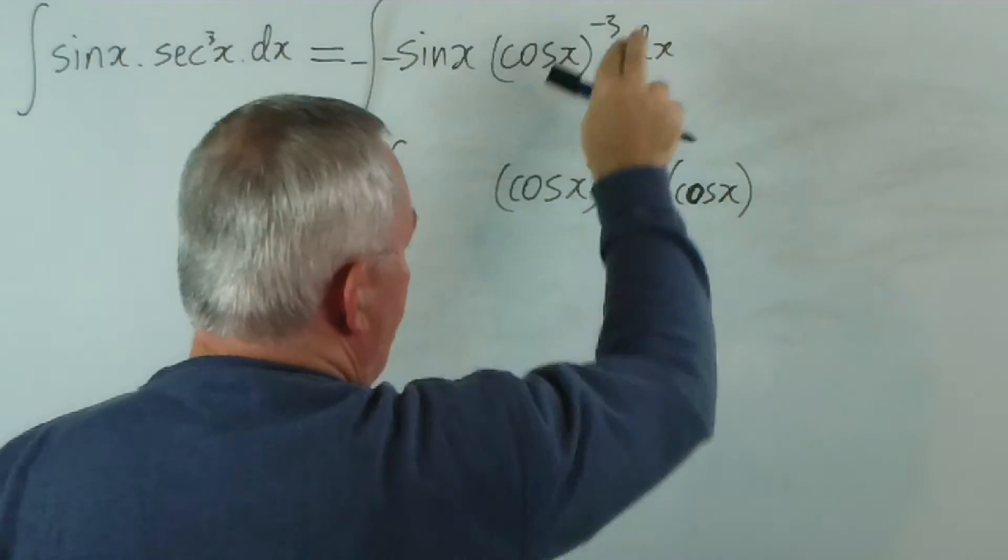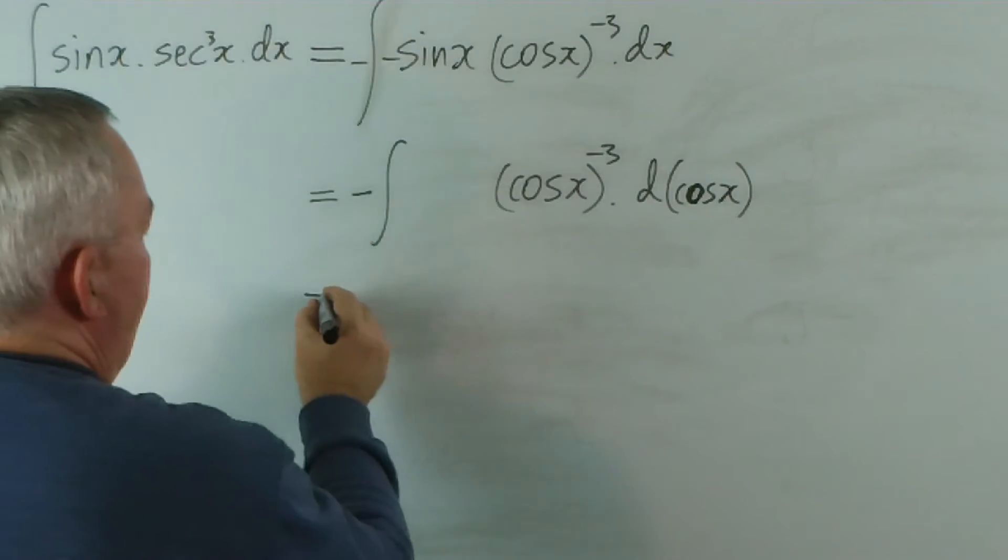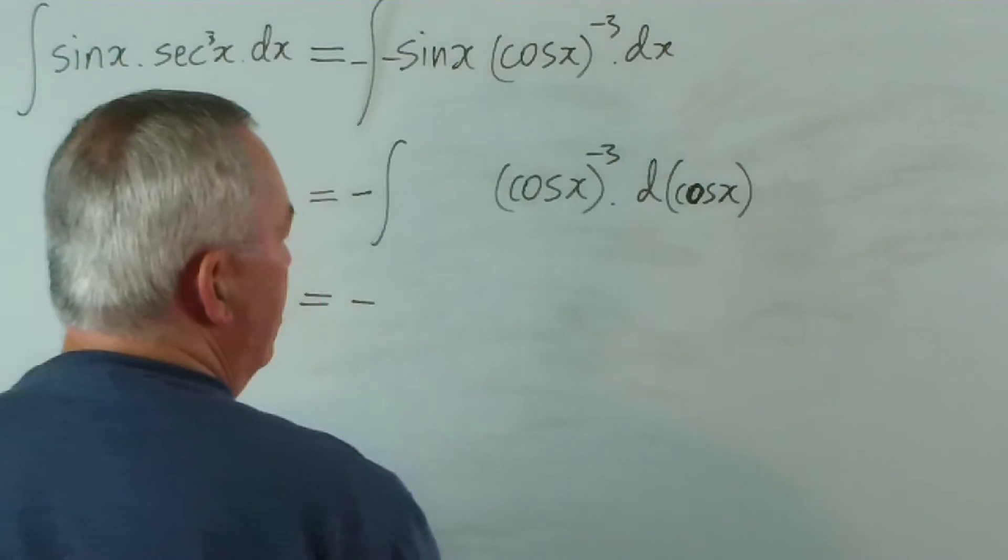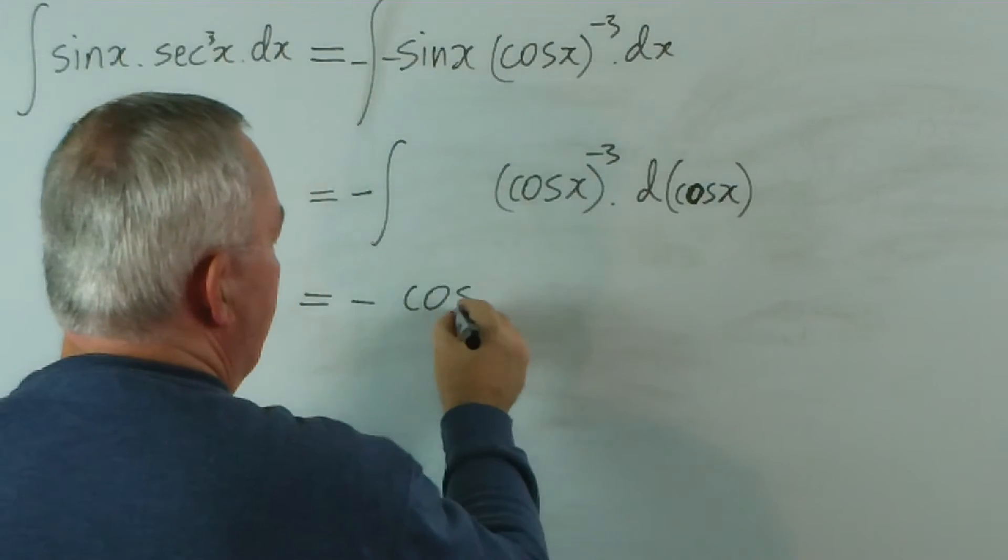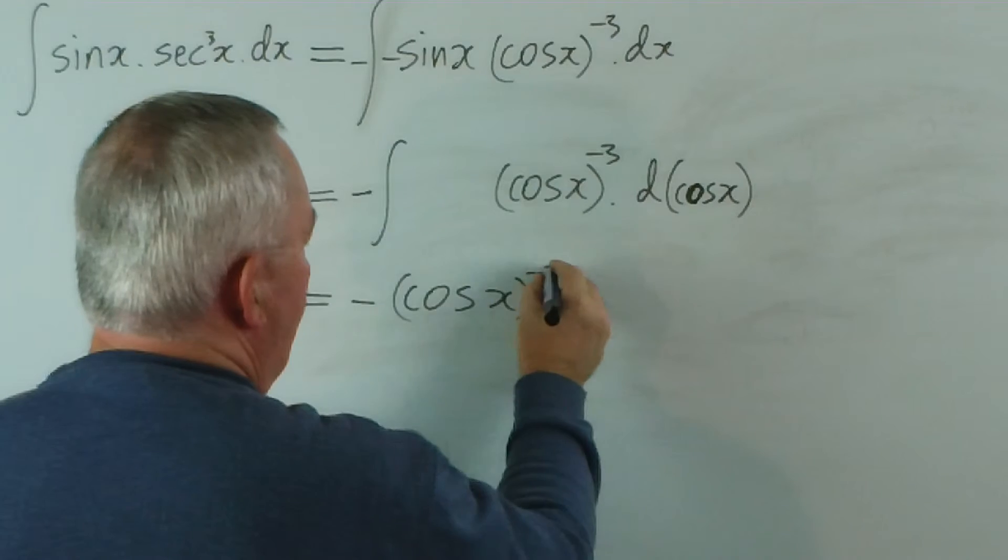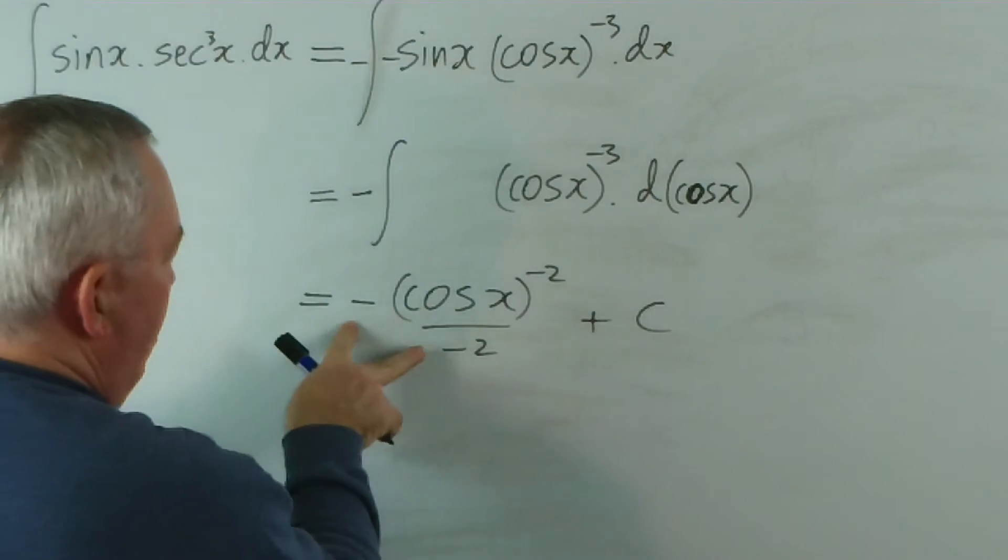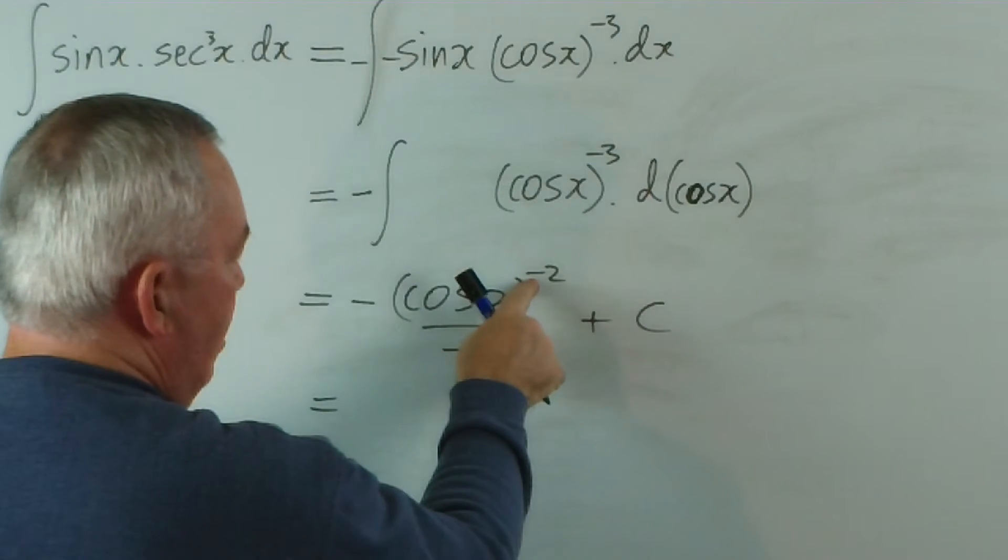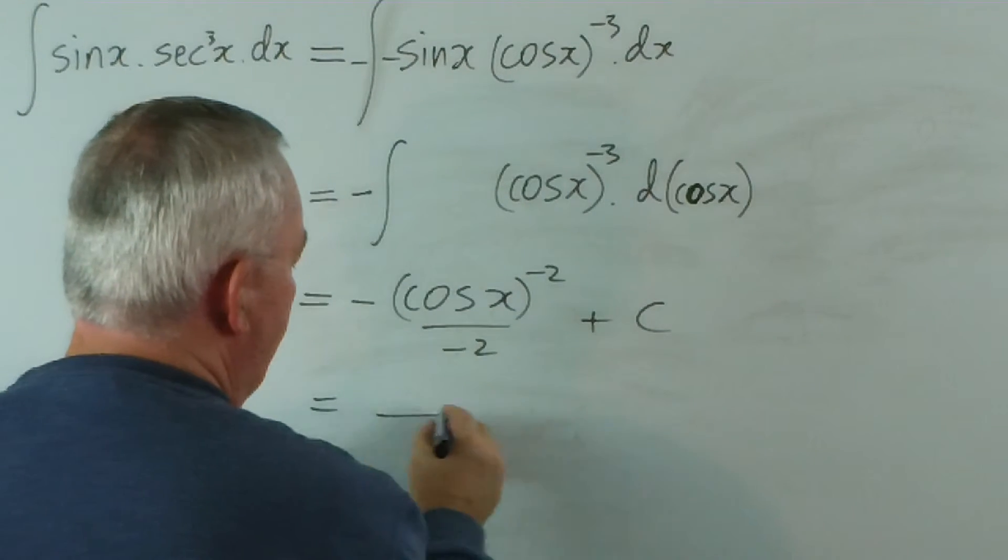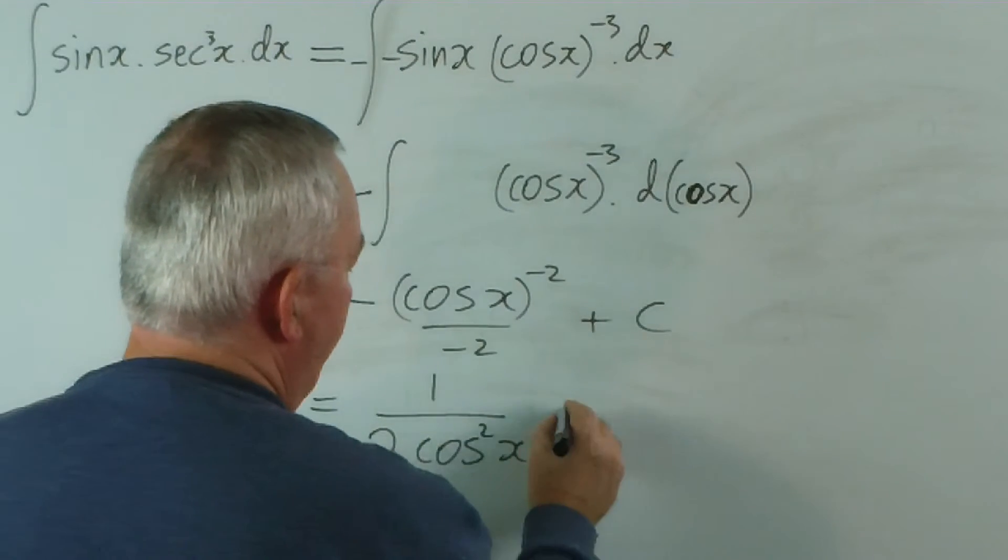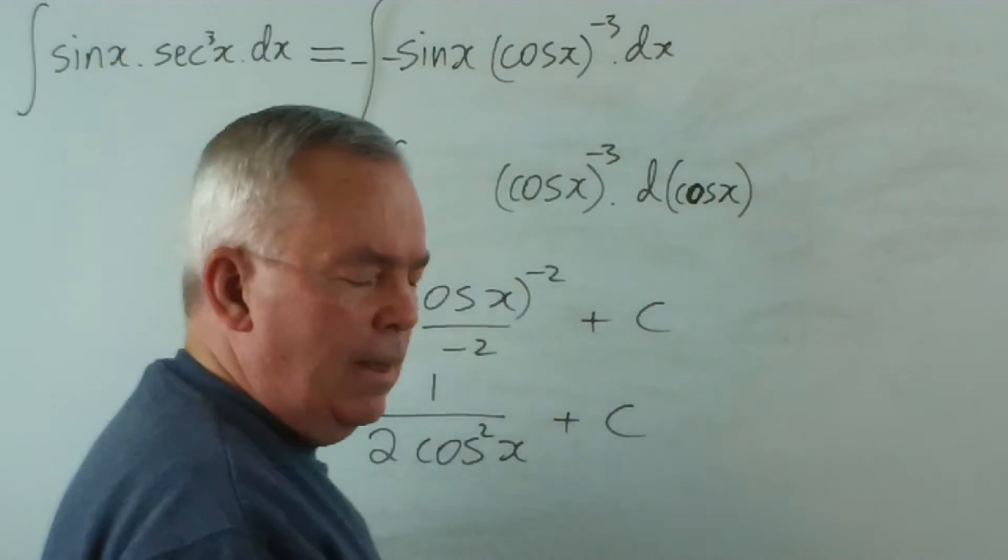And with the dx underneath it would appear at the top. And this one I just treat as u to the negative 3 du. So I get cos x to the negative 2 over negative 2 plus c. The two negatives make it positive. And this negative index brings the cosine squared down. So, again, I get that.